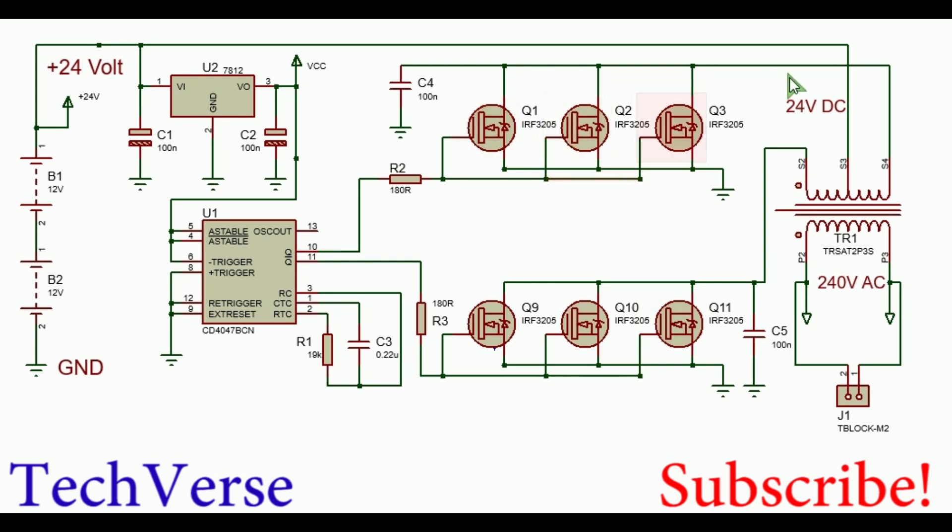When the upper MOSFETs all conduct, current flows from the 12 volts rail through this half of the primary winding, through all the MOSFETs to ground.